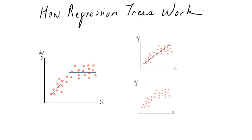So a regression tree finds the partition of the data for which different linear equations are used to fit different partitions of the data. For example, the regression tree would find the partition somewhere around here, and after that it will fit the data separately with a regression line for data below some value, say x₀, and for data greater than x₀ the fit will be a flat line.